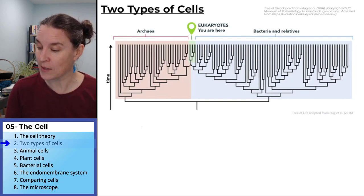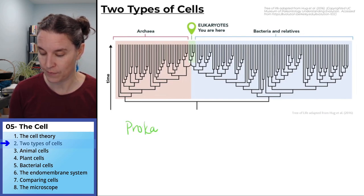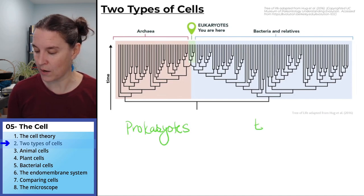So the two types of cells that we are going to look at are prokaryotes. That's an R, and eukaryotes.